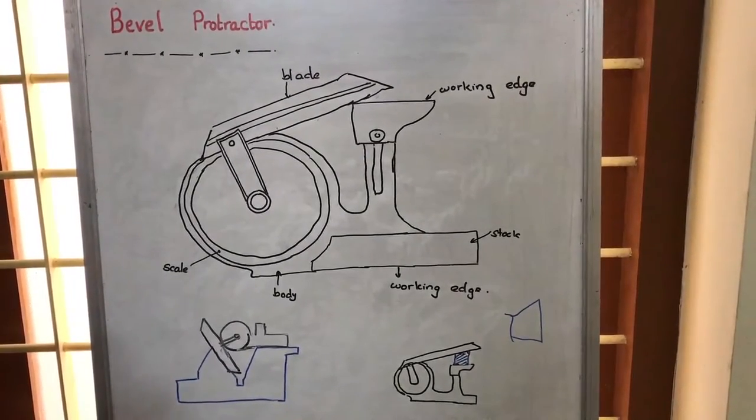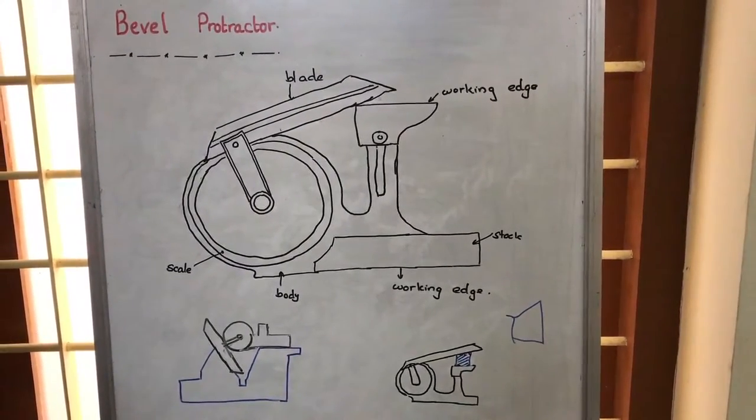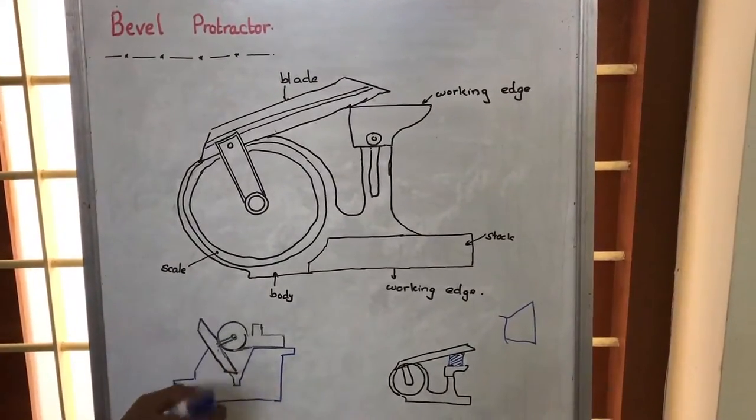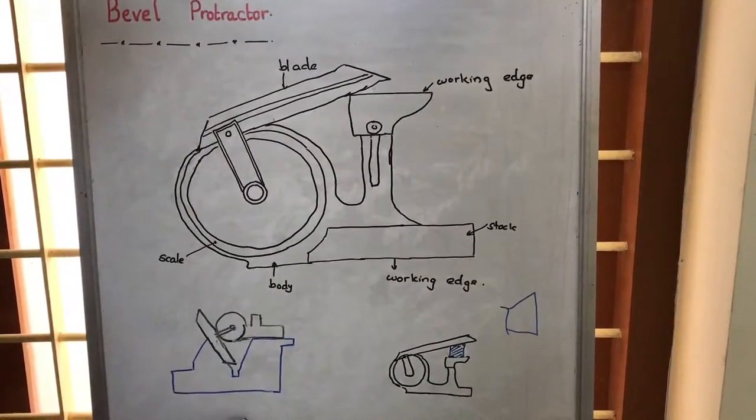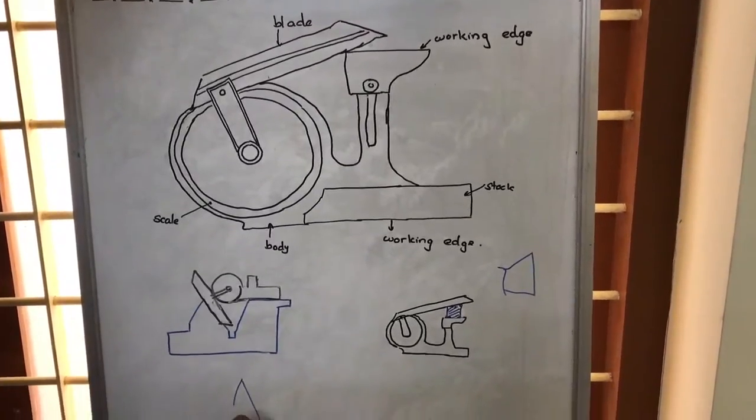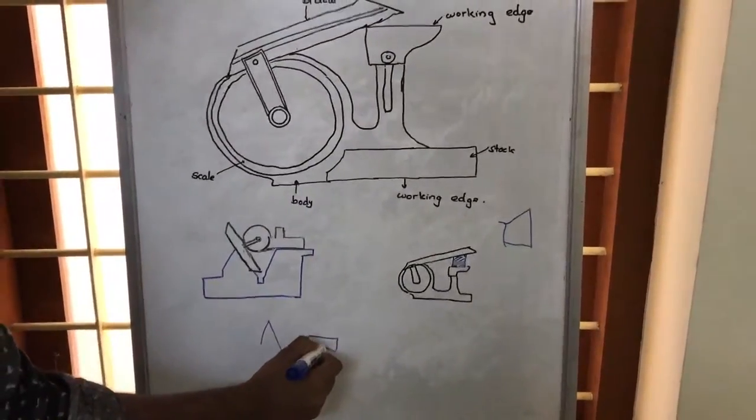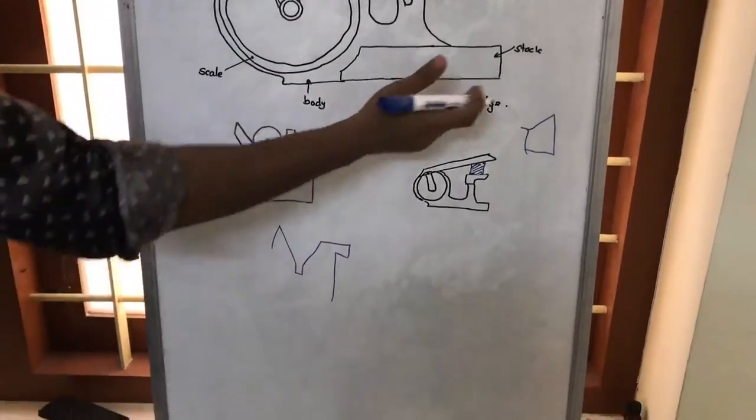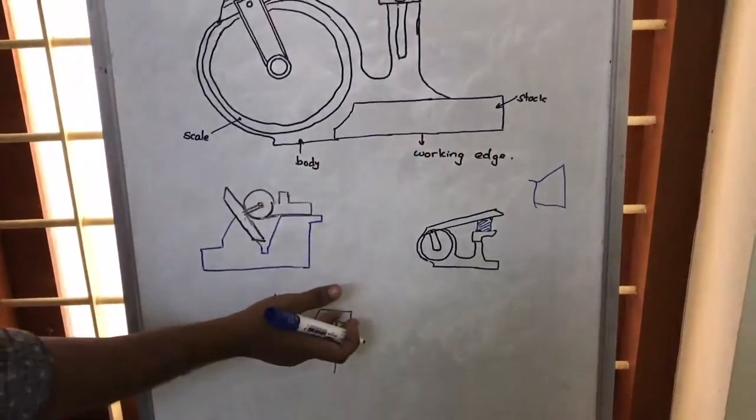We can also measure the angle of a V block. The V block will be somewhat like this. What we do is we will be keeping this edge, this particular edge here.